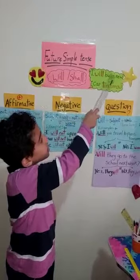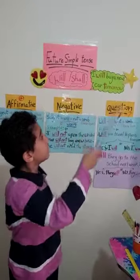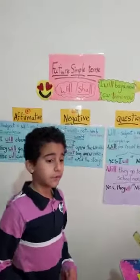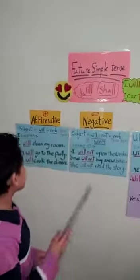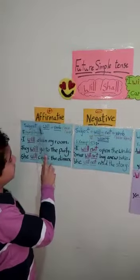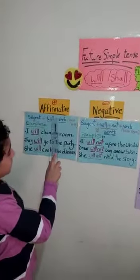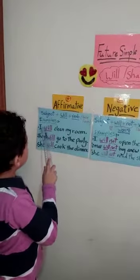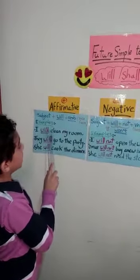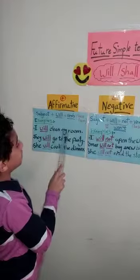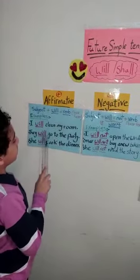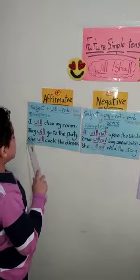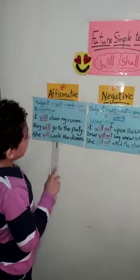For example: 'I will buy a new car tomorrow.' Now we will talk about the affirmative form: subject, then 'will', then the verb in the base form. For example: 'I will clean my room.' 'They will go to their party.' 'She will cook their dinner.'